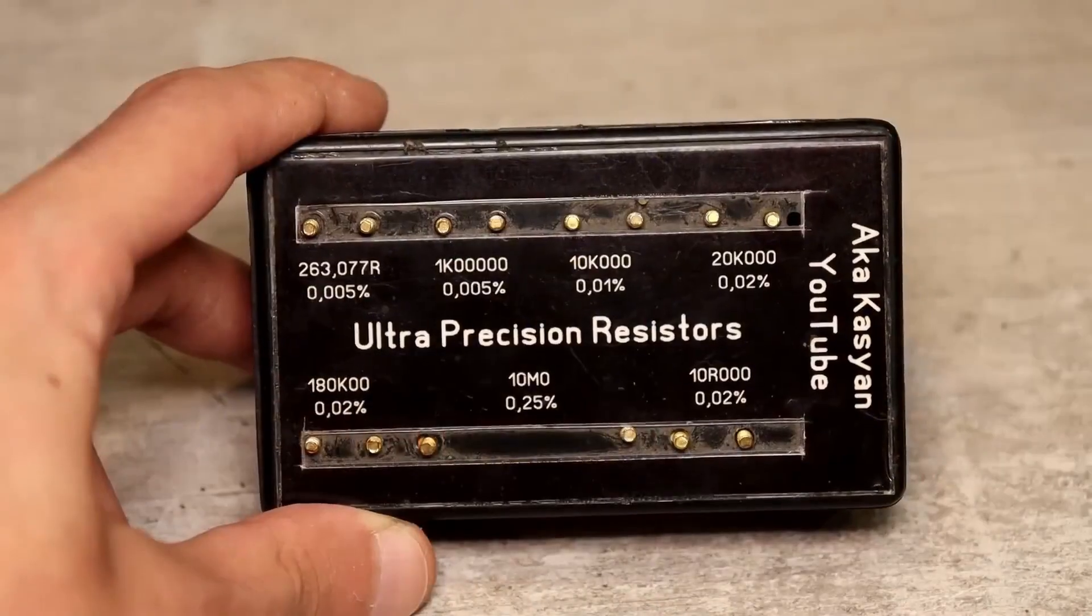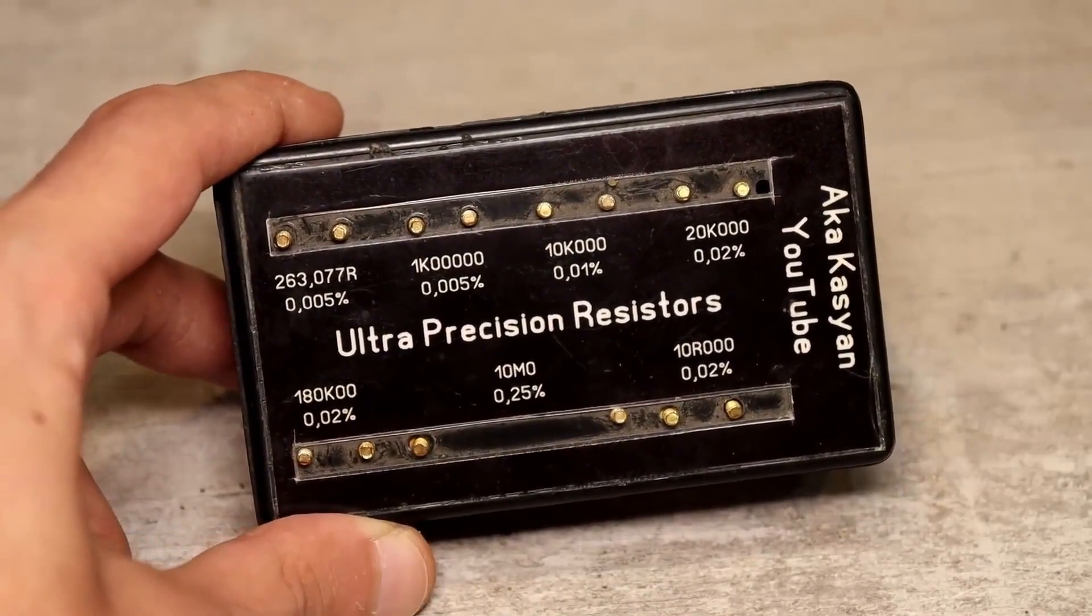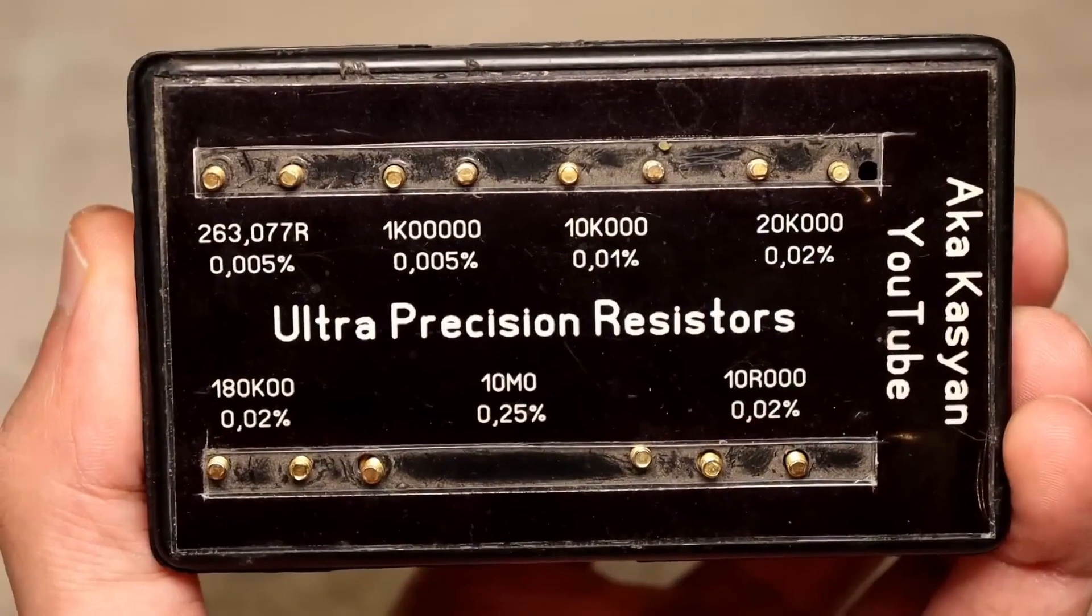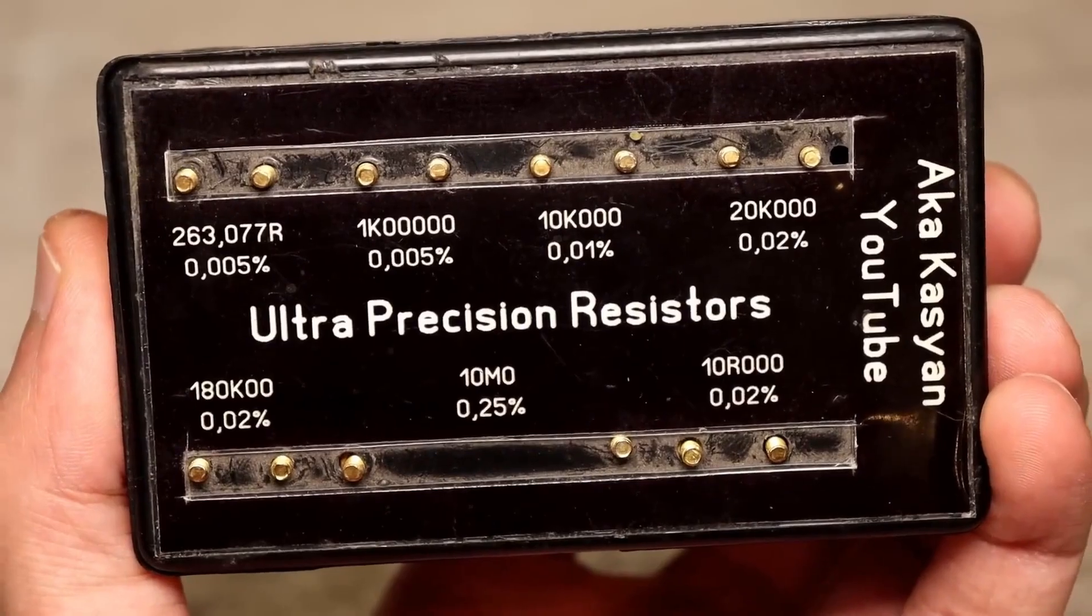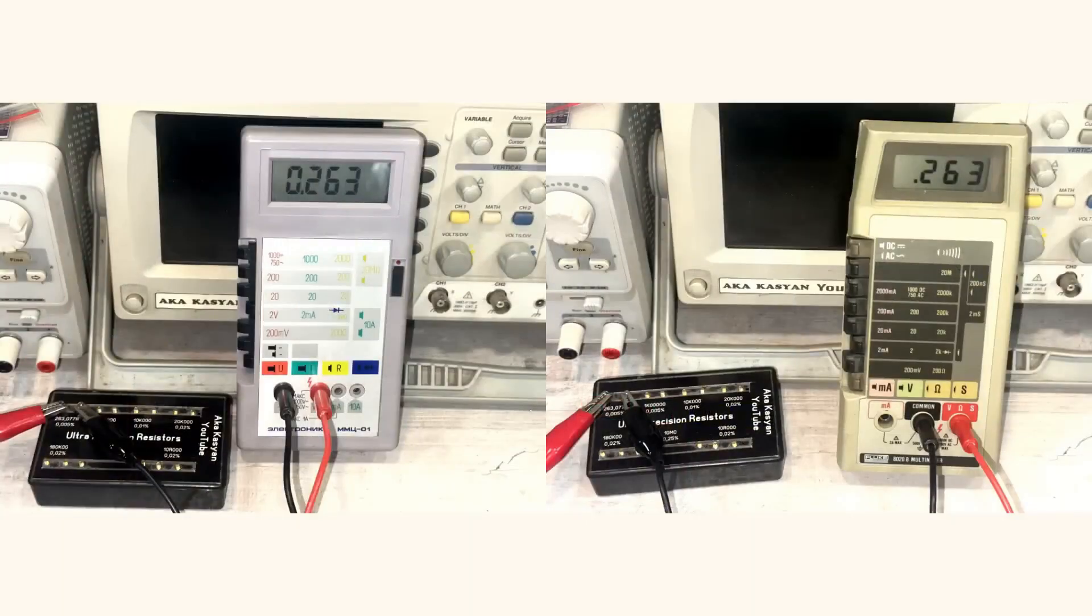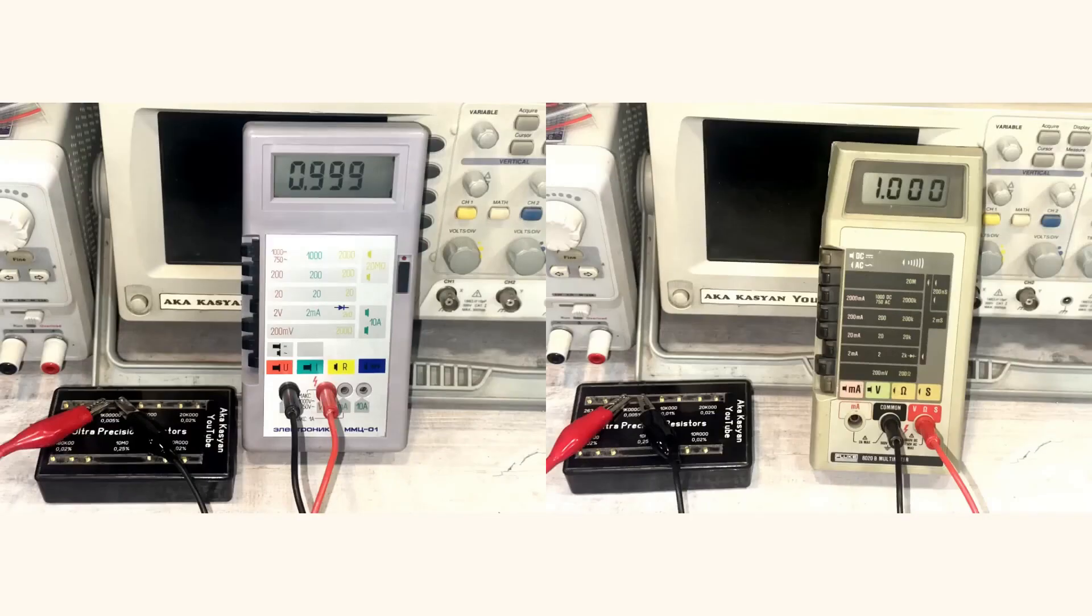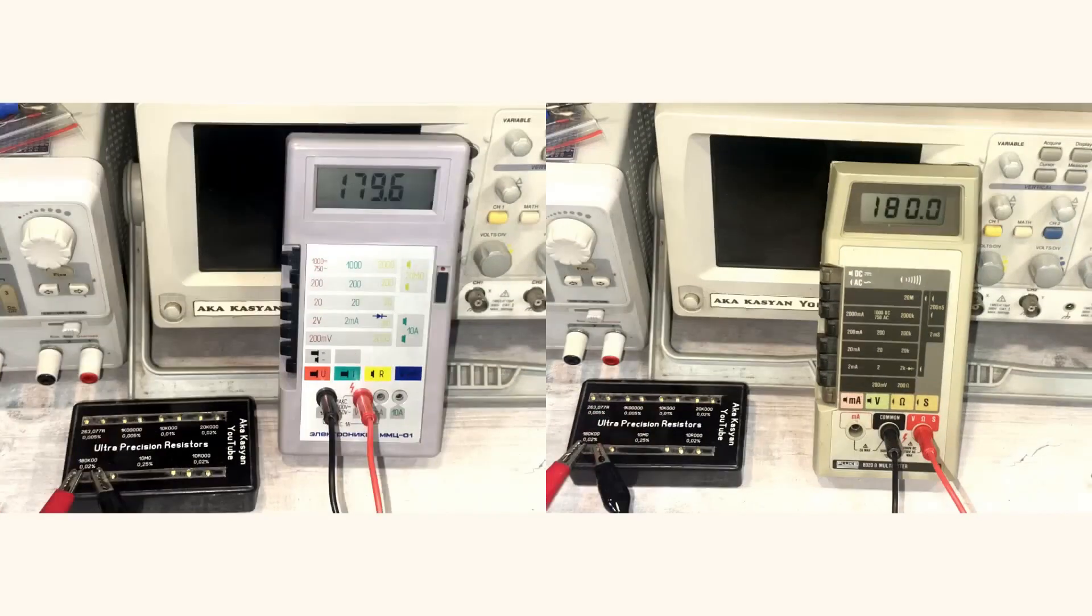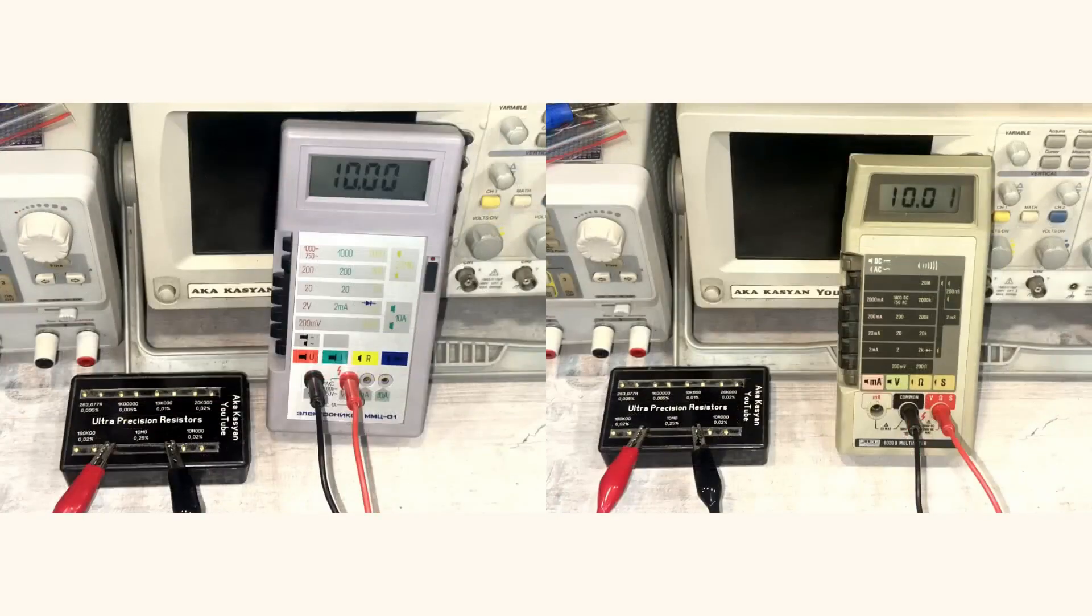Resistance meter. We have this kind of box, inside which are hidden ultra-precise and ultra-stable resistors. The first reference resistance is 10 ohms. Fluke. Electronics MMC 01. 263.077 ohms. 1 kiloohm. 10 kiloohms. 180 kiloohms. 10 megohms.